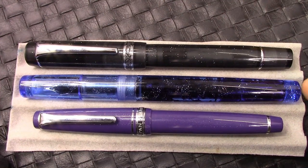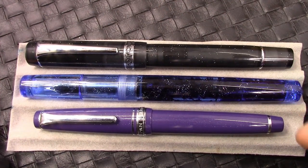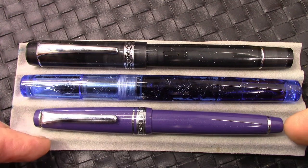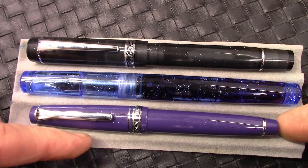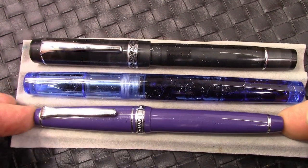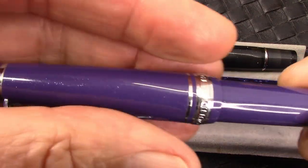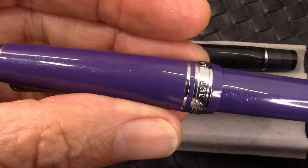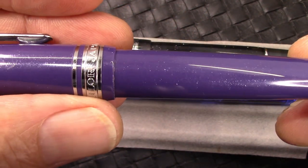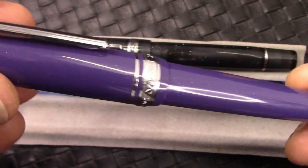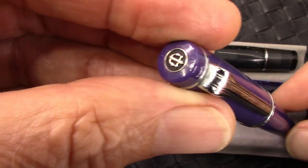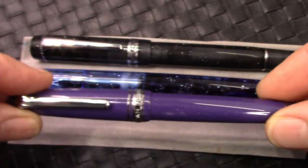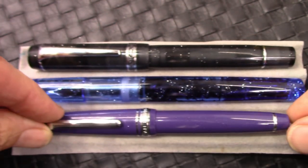So here's some other pens with some sparkle in them. This is one I've had the longest. A Sailor Pro Gear Slim. Nice purple. And a subtle sparkle. Very nicely done. Very well made pen as Sailors are known for. And a nice nib.